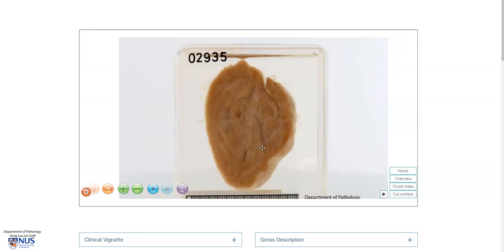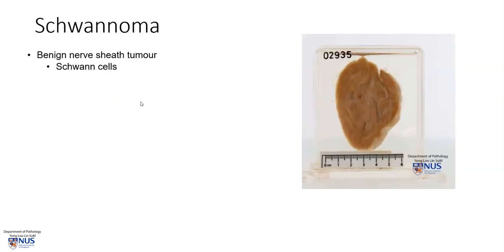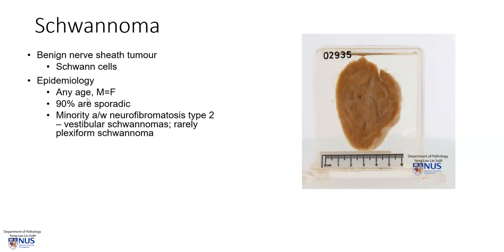Let's learn a bit more about schwannoma. Schwannomas are benign nerve sheath tumors, and they arise from Schwann cells. They occur at any age and with an equal gender distribution. Most schwannomas are sporadic, but a small percentage will be associated with syndromes such as neurofibromatosis and NF type 2.